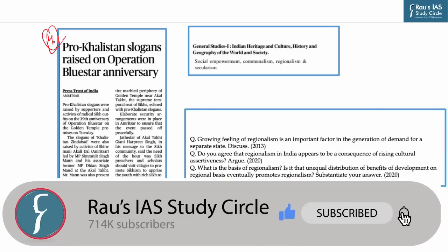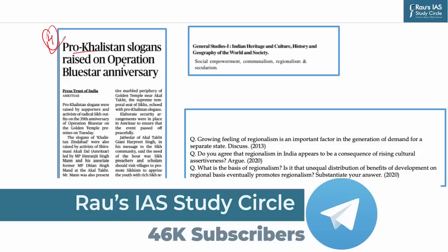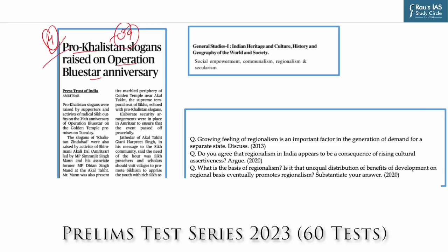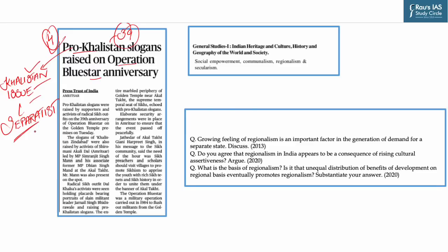Let's start our discussion with the first article which appeared on page number four in The Hindu. The context is that pro-Khalistan slogans were recently raised by supporters and activists of radical Sikh outfits on the 39th anniversary of Operation Blue Star at the Golden Temple. Now, what is the Khalistan issue? Khalistan is a separatist movement which aims to create a nation state serving as a homeland for Sikhs in the Punjab region of the Indian subcontinent. The proposed state would consist of land that currently forms Punjab in India and Punjab in Pakistan.